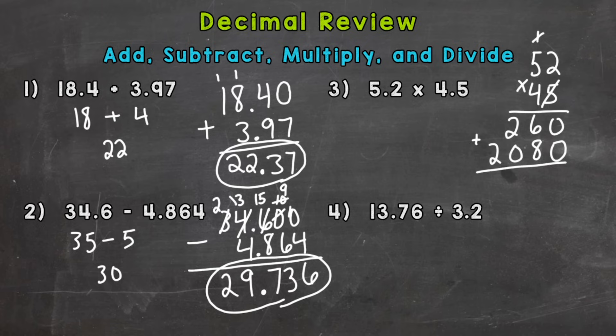Now we add our partial products. 0 plus 0, 6 plus 8 is 14. 1 plus 2 is 3. And we have our 2 here. Now, we need to put our decimal back in to our answer. So we take a look back at our original problem. And we need to see how many digits are to the right or behind a decimal. Well, we have this 2 here. So that's 1. And we have this 5 here. So that is 2. 2 digits behind the decimal.